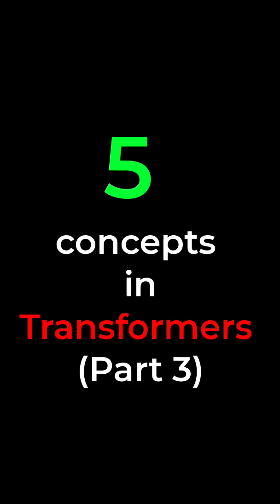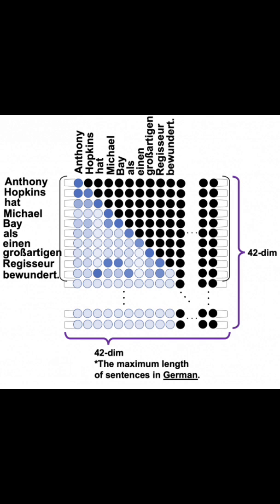Five concepts in Transformers. 1. Look-ahead mask. This is one of the two types of maskings in a transformer neural network that makes sure that words cannot derive context from other words that are ahead of them.